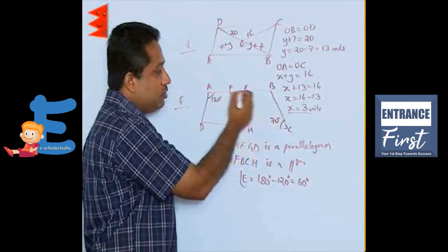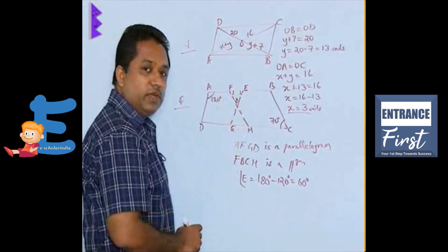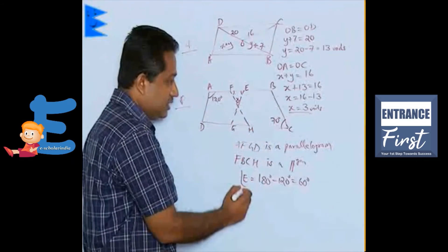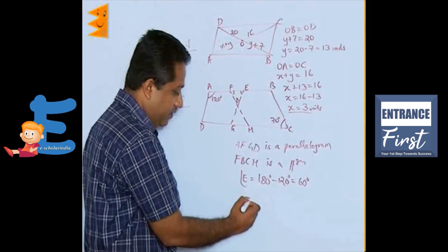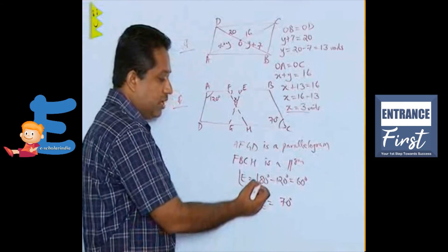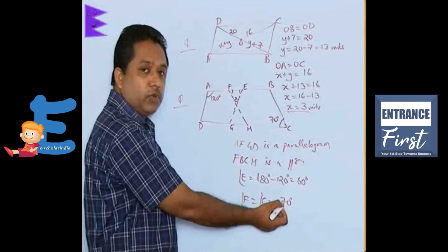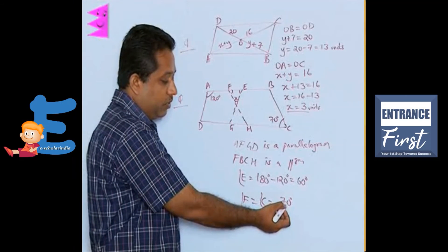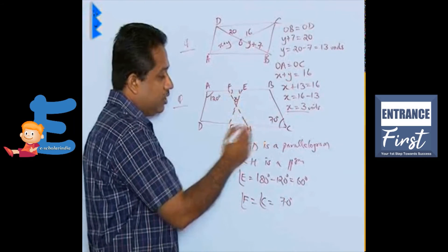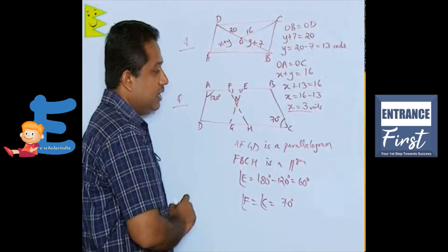In the second parallelogram BCHF, angle C is 70°. Using the property that opposite angles of a parallelogram are equal, angle F equals angle C, so angle F is 70 degrees. So far we have used two properties: sum of co-interior angles equals 180, and opposite angles of a parallelogram are equal. We now have two known angles, E and F, and one unknown angle X.